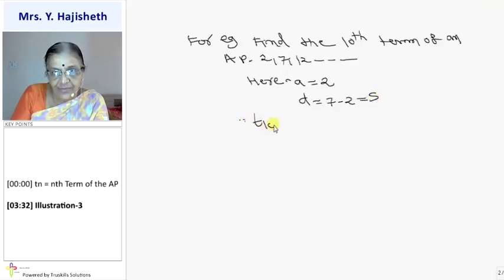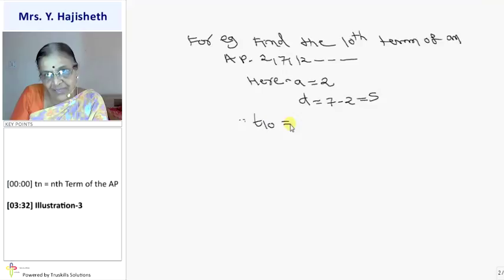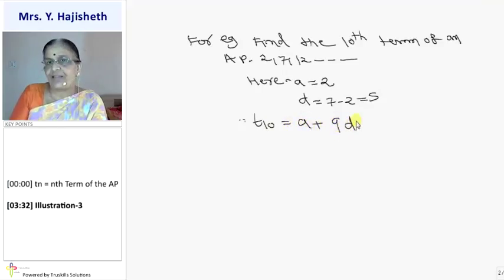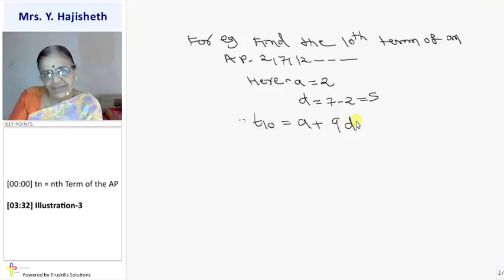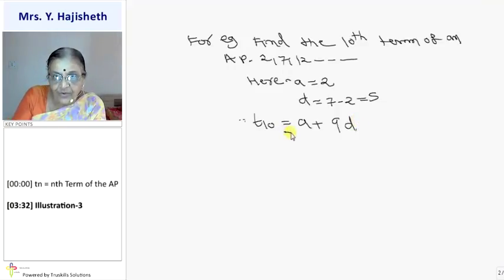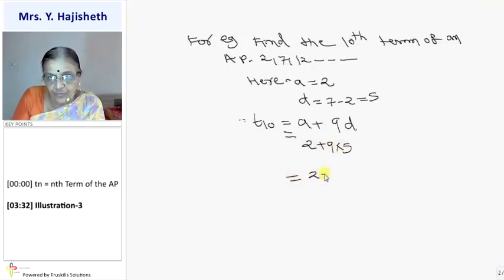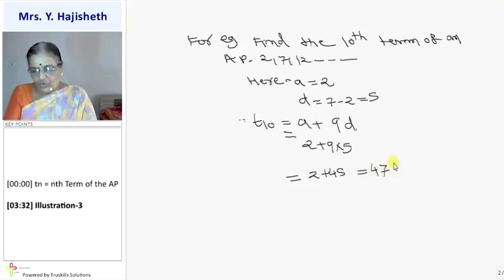So naturally my T10 will be, Tn is A plus N minus 1 D, so T10 is A plus 10 minus 1, so 9D. Direct formula you can take. Tn is A plus N minus 1 D, to T10 is A plus 9D. Put the value: A is 2 and D is 5. So it is 2 plus 45, and that is 47. What is your 10th term of an AP? 47.